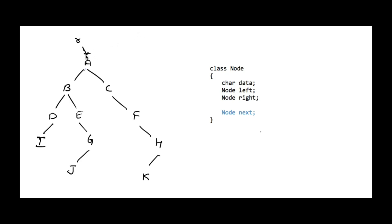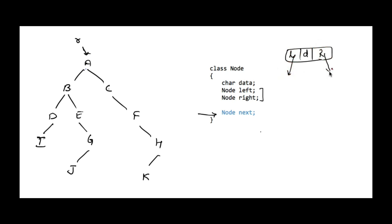This is a typical interview question where you are given a binary tree and the structure of the node is changed so that it has one extra node pointer in addition to the left and right pointers. Normally the node of a binary tree has one data field, one left pointer and one right pointer. We have added one extra pointer to this node — let's call this the next pointer. Initially the next pointer of all nodes holds null.